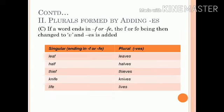Similarly, if a word ends in F or FE, the F or FE is then changed to V and ES is added. For example: leaves, halves, thieves, knives, lives, etc.